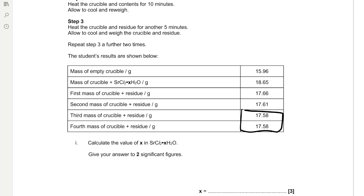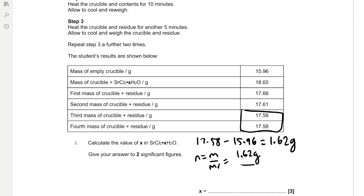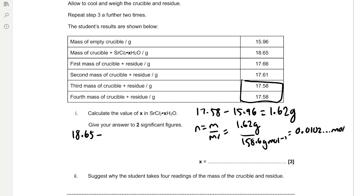To find the mass of the anhydrous strontium chloride we subtract the mass of the empty crucible from the 3rd or 4th mass of the crucible: 17.58 minus 15.96, which gives us 1.62 g. To find the moles we use moles = mass / Mr, so moles = 1.62 / 158.6 = 0.0102 mol. Then we find the mass of water removed by subtracting the 4th crucible mass (17.58 g) from the mass of the crucible with hydrated strontium chloride (18.65 g), giving 1.07 g.